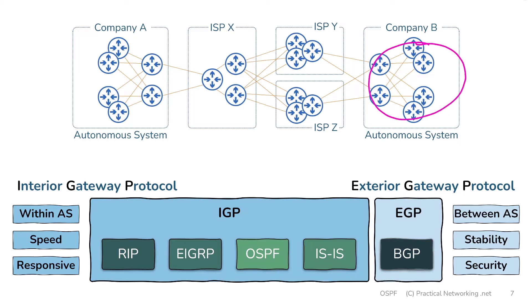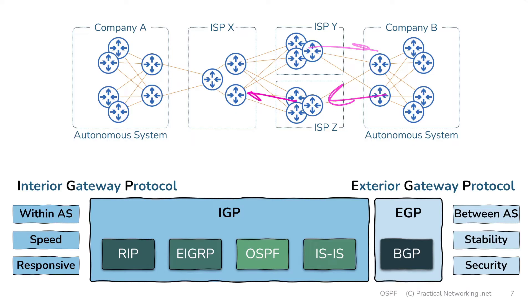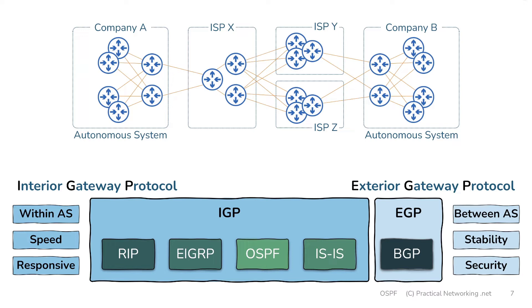BGP gives a company the ability to share routes with multiple ISPs and include information and preferences that can influence the rest of the internet and how they choose paths to reach that company's network. Maybe a company wants to prioritize traffic going through a particular path because a link is faster or less expensive. With an exterior gateway protocol like BGP, you can influence route selection of ISPs multiple autonomous systems away. BGP has a whole 12-step route preference sequence it goes through when determining what routes to select, and it allows all sorts of mechanisms for controlling inbound and outbound paths between autonomous systems — whereas IGPs only offer a few ways to influence path selection.